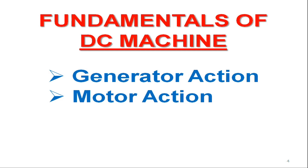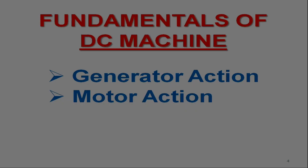The working of a DC machine can be described by two actions. The first one is generator action and the second one is motor action. The generator action is based on Faraday's law of electromagnetic induction. On the other hand, motor action comes into picture when a current-carrying conductor experiences a force upon being placed in a magnetic field. Before discussing these machine actions in detail, let us first understand Fleming's left and right hand rules, which are applicable for motor and generator actions respectively.